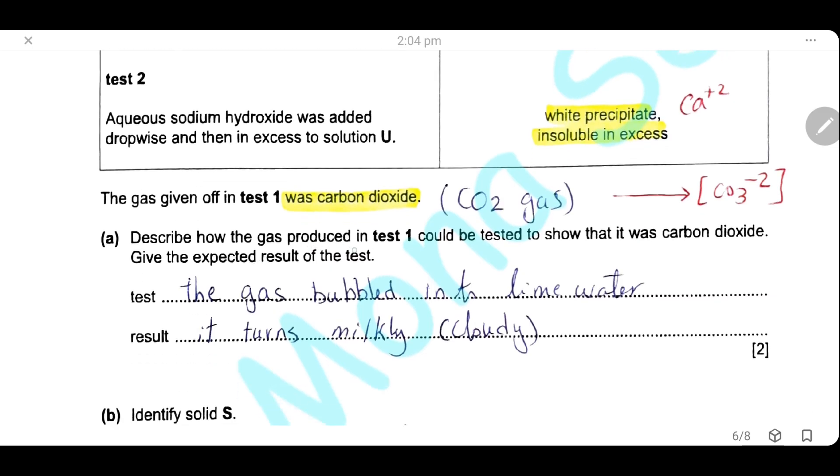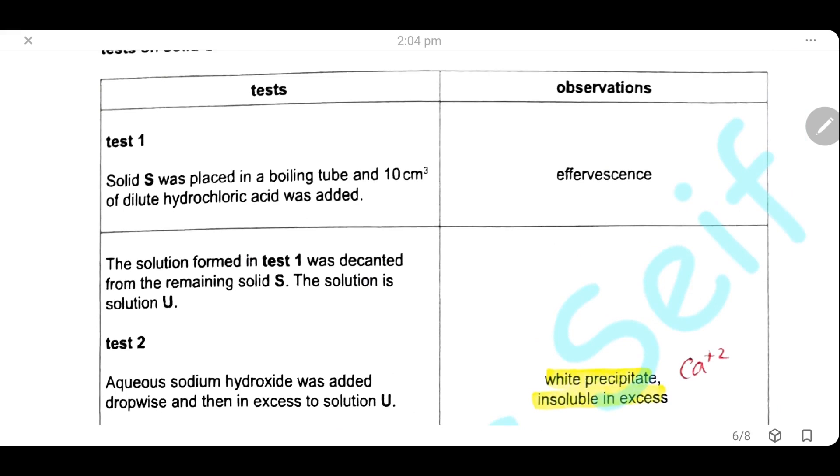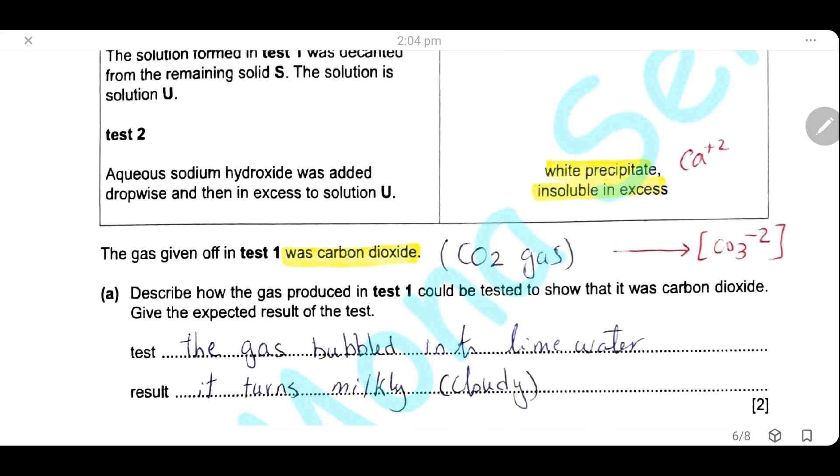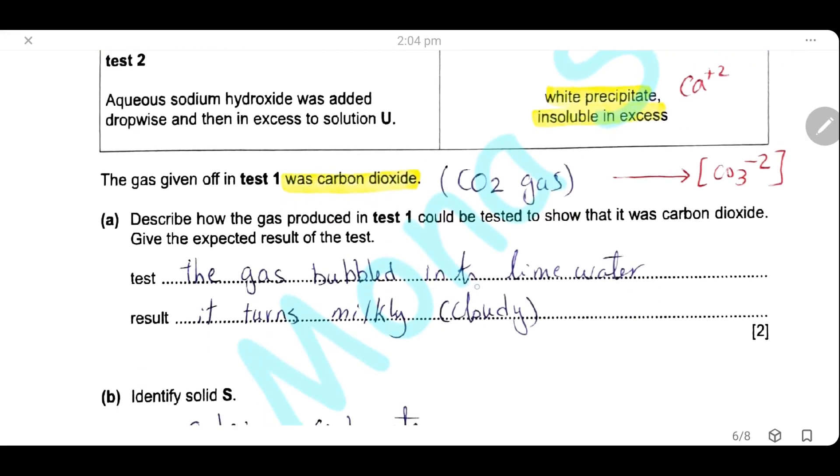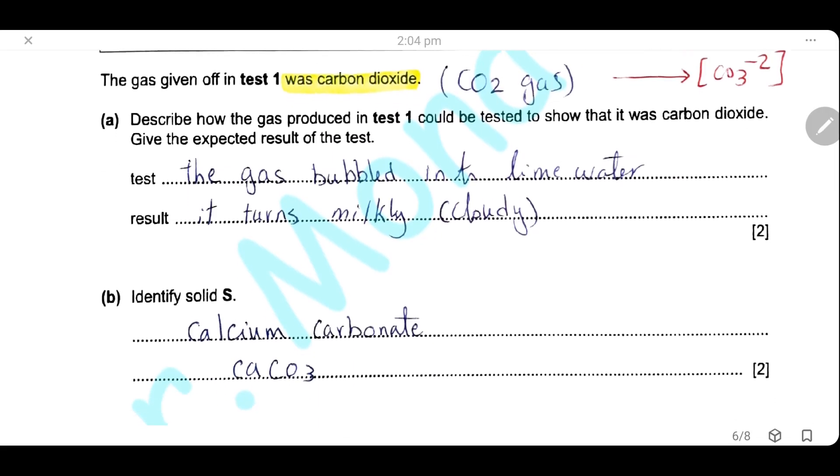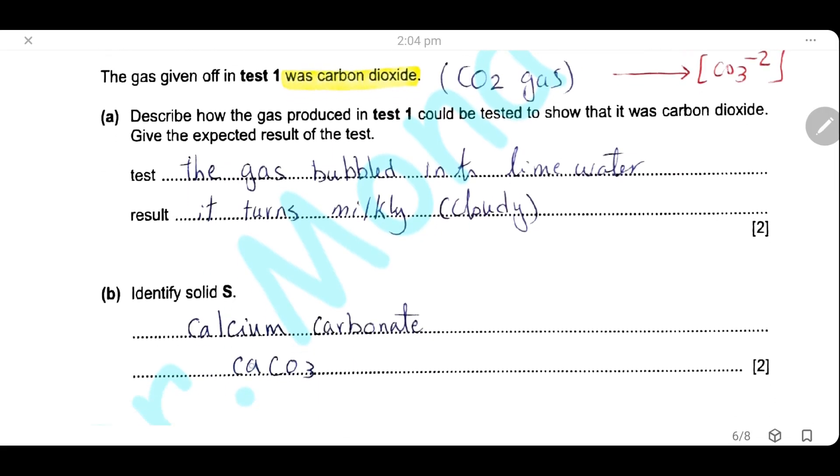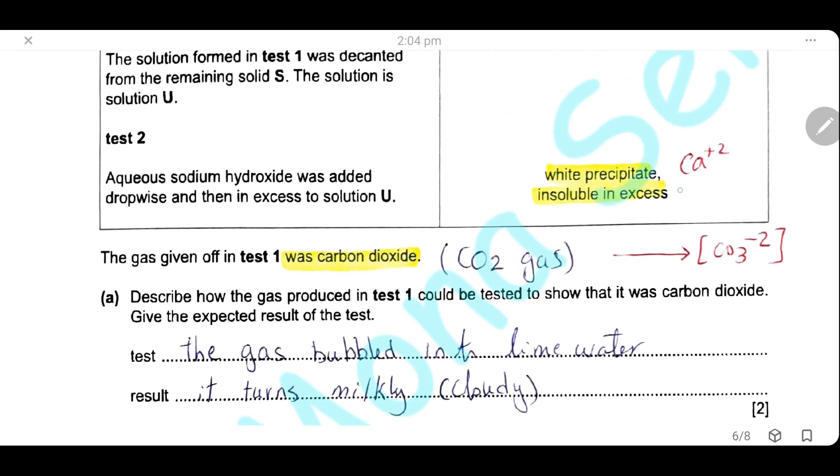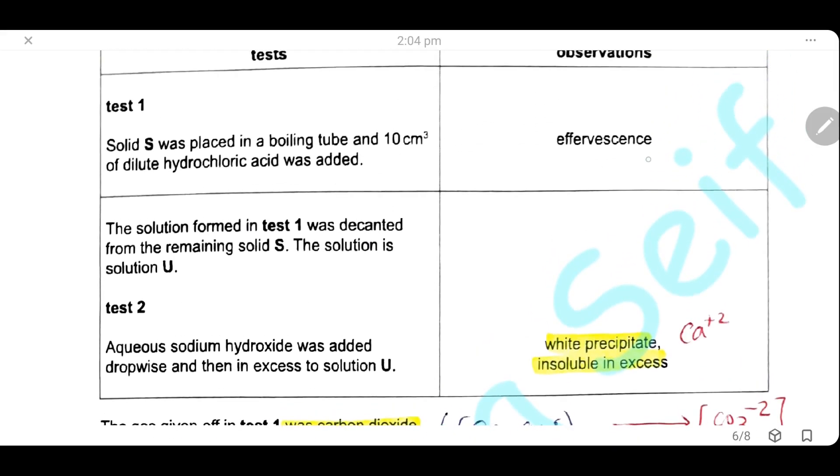The tests given on the gas formed in test 1 show that it is carbon dioxide. Describe how the gas produced in test 1 could be tested to show that it is carbon dioxide. Give the expected result for your test. The effervescence here was carbon dioxide. That indicates that the anion is carbonate. We should write the test for carbon dioxide gas. The test is bubbling the gas through lime water and the result is that the lime water turns cloudy or milky. Now, we should identify solid S. Solid S is calcium carbonate because here we have the cation is calcium and the anion is carbonate.